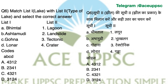Question number 6. Match list 1 with list 2. List 1 has some lakes and list 2 has the type of lake. The answer is D: 3, 1, 2, 4. Bhimtal Lake is a tectonic lake in Uttarakhand. Ashtamudi Lake is a lagoon lake in Kerala. Gohana Lake is a landslide lake formed after a landslide in Uttarakhand. Lonar Lake is a crater lake in Maharashtra.